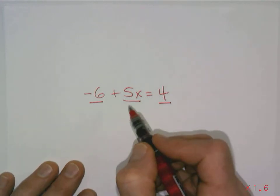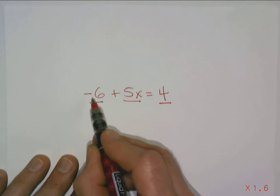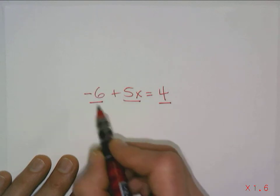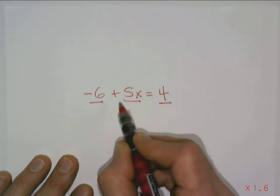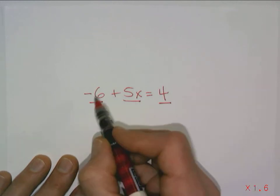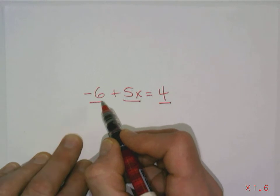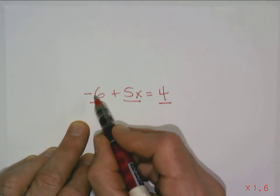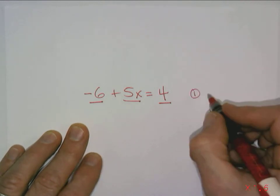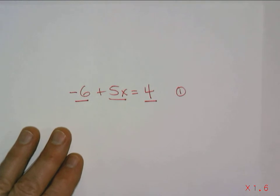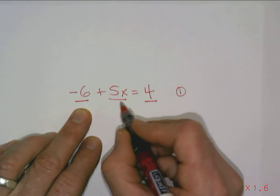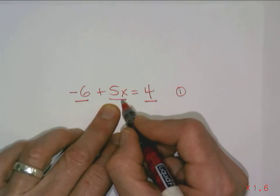Now this one might not be quite as obvious because the negative 6 is over here and the operation we would think of is subtraction. It's almost like you would think of subtract 6 and add 5 times x. So the question would be what's the operation taking place here? Well you can think of everything as addition just of positive and negative numbers. So here we're adding a negative 6. So my first step is the same as I did before. I always want to look for the number term first because we want to do addition subtraction first and we'll do multiplication division second.